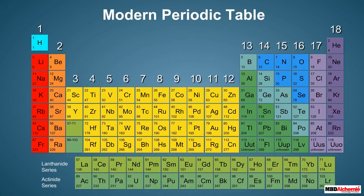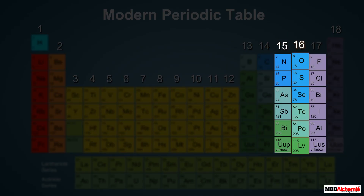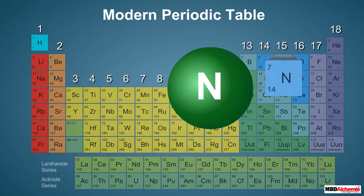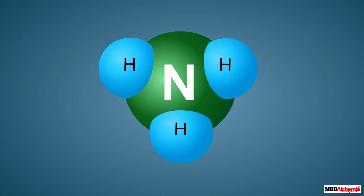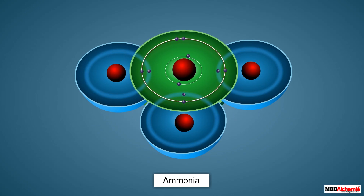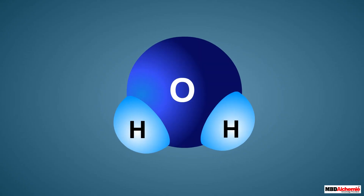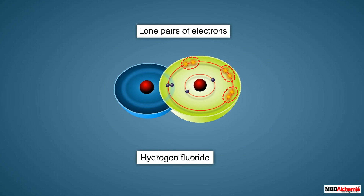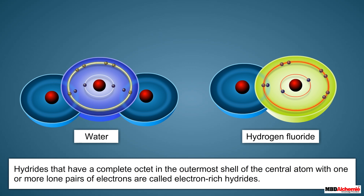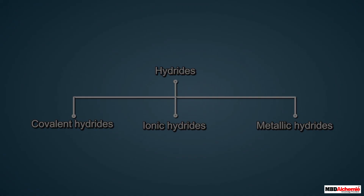Electron rich hydrides are formed by elements of groups 15, 16, and 17. For example, nitrogen belonging to group 15 combines with hydrogen to form ammonia. In an ammonia molecule, the central nitrogen atom has a complete octet, but two electrons exist as a lone pair. Similarly, hydrides of group 16 like water exist with two lone pairs, and hydrides of group 17 like hydrogen fluoride exist with three lone pairs. Such hydrides that have a complete octet with one or more lone pairs are called electron rich hydrides.